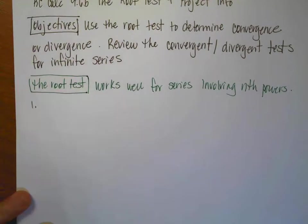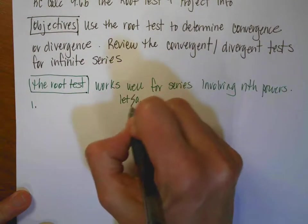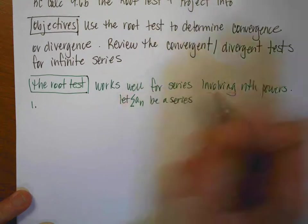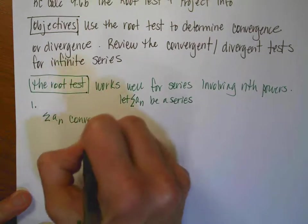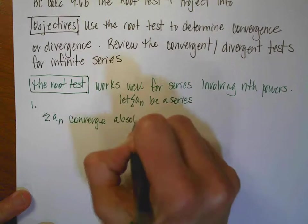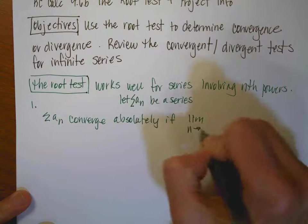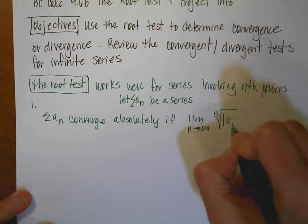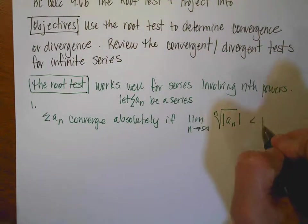So here are the details about the root test. We're going to let the sum of a sub n be a series. The first condition says that the sum of a sub n is going to converge absolutely if the limit as n approaches infinity of the nth root of the absolute value of a sub n is less than 1. Remember, this means we're not going to talk about the alternating signs.